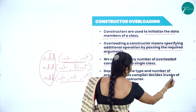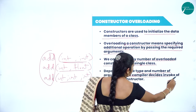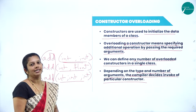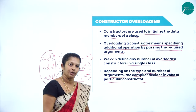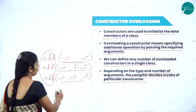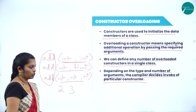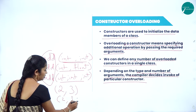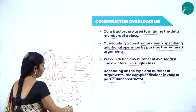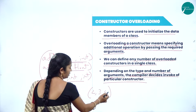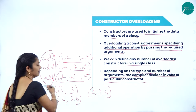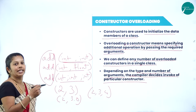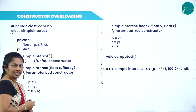Depending on the type and number of arguments, the compiler decides which constructor to invoke. For example, if you pass two integer values like 2 and 3, the first constructor executes. If you pass 2 and 3.0, the second one executes. If you pass 2, 3, 4 — all integers — the third one executes. That will be explained with one example program. Consider finding simple interest, where the formula is PTR divided by 100.